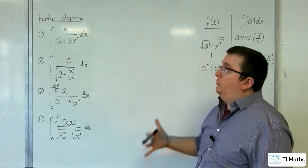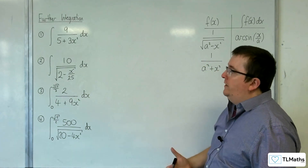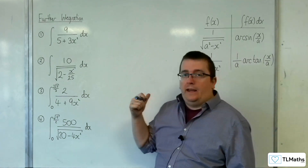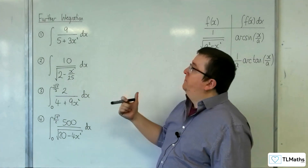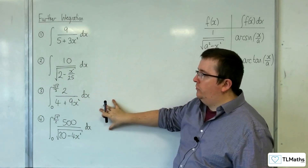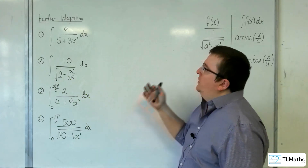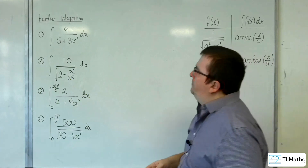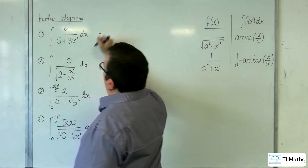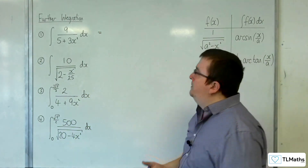In this video I'm going to go through some examples of integrating that will result in inverse trig. We've got two indefinite integrals and then two definite integrals at the end. Let's go with number one. We've got the integral of 9 over 5 plus 3x squared.